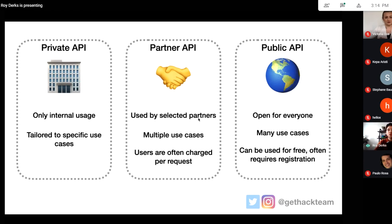Partner APIs are a bit more different. They're used by selected partners — a way to expose your data for selected partners. Maybe your company wants a partnership with a different organization, and they can expose their data over a partner API, possibly as an abstraction on top of internal APIs or a completely separate product. You'd often be charged to use it, or have some sort of agreement. For example, an e-commerce company partnering with a warehouse — those are usually partner APIs, not open for everyone.